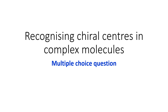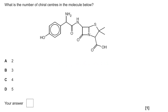Welcome to this short clip looking at a multiple choice question that gets you thinking about and recognizing chiral centers in unseen complex molecules — ones that you haven't necessarily seen in the textbook before. It gives you four options, so you need to think about what a chiral center actually is first of all.